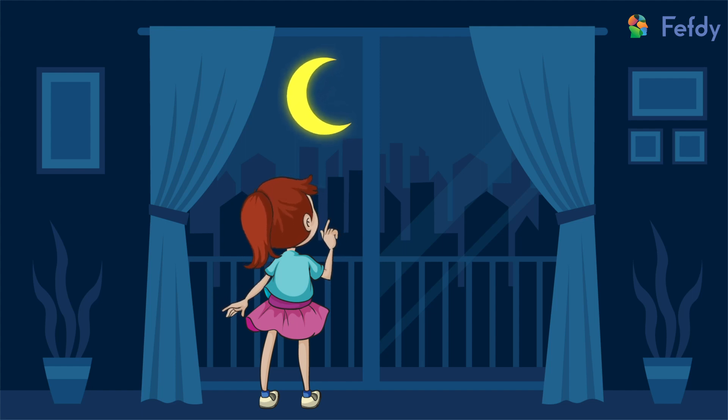Shall we try tracing this? First we will loop up the top of the moon and then come down to trace the whole moon. That's it! We have the capital letter C.